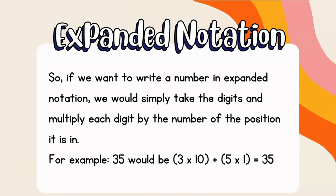So if we want to write a number in expanded notation, we simply take the digits and multiply each number by the value of the position it is in. For example, let's say we have the number 35. We're going to take the 3 from the tens place and multiply it by 10 — so we have 3 times 10 — then plus 5 in the ones place, 5 times 1. That gives us 35: 3 times 10 is 30, 5 times 1 is 5, and 30 plus 5 is 35.